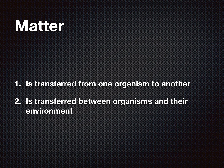First thing is matter. Matter is something that takes up space — it's what makes everything in the world. The two things you need to know about matter and the food chain: one, matter is transferred from one organism to another, and two, it's transferred between organisms and their environment. Both relationships you saw in your ecosystem unit last year with different things living off each other, being interdependent.